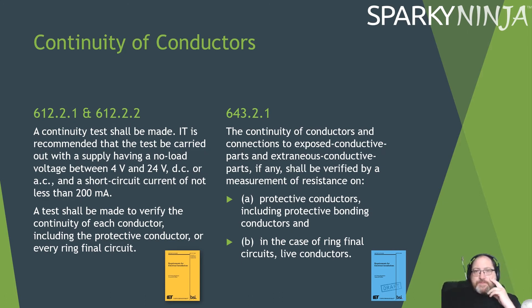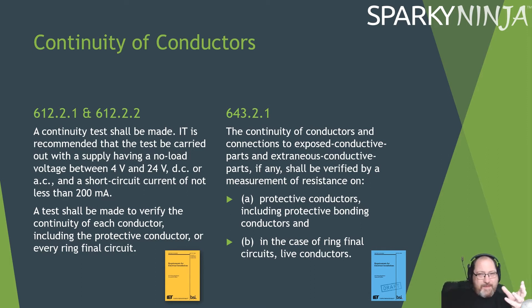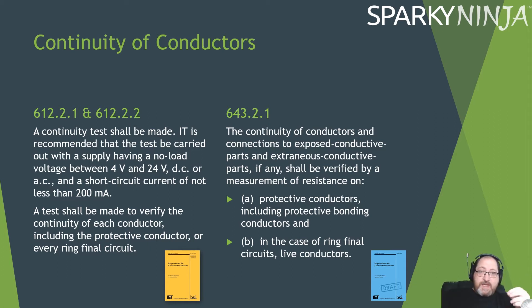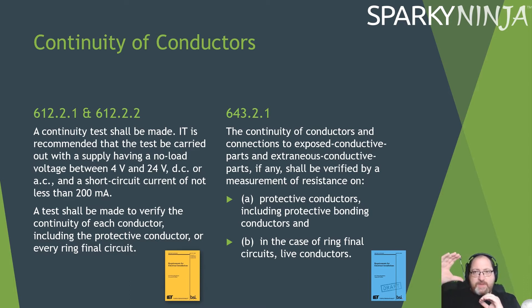Continuity of conductors — again, it's just a reword. The old regulation said it should be recommended to be carried out with a supply of no-load voltage of 4 volts to 24 volts — that's all gone. It now says the continuity of conductors and connections to exposed conductive parts and extraneous conductive parts shall be verified by measurement of resistance on protective conductors, including bonding conductors, and in the case of ring final circuits, live conductors. So that's the old two regulations, 61221 and 61222, compressed into one regulation, covering ring final circuits as well.